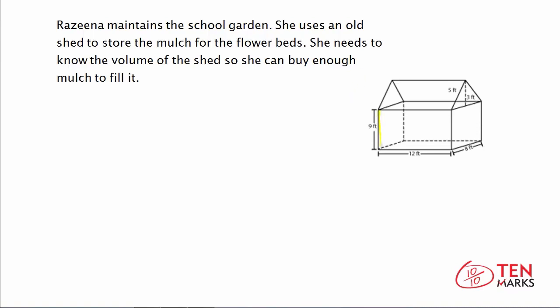On the bottom, because it's a shed, you've got a rectangular prism. I'm going to highlight the edges of this prism in yellow. As you can see, it's just a box. We're going to find the volume of that, and then separately find the volume of the top part of the shed — the roof area — which is a triangular prism.